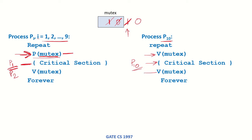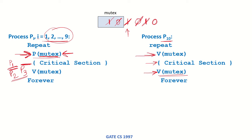Now p10 executes the next statement, V(mutex), making mutex 1 again. One of the remaining processes, say p3, wishes to enter the critical section, executes P(mutex), mutex becomes 0, and p3 enters. So p1, p2, and p3 are now in the critical section. Again p10 executes V(mutex), making mutex 1 and entering the critical section again, allowing yet more blocked processes to enter.